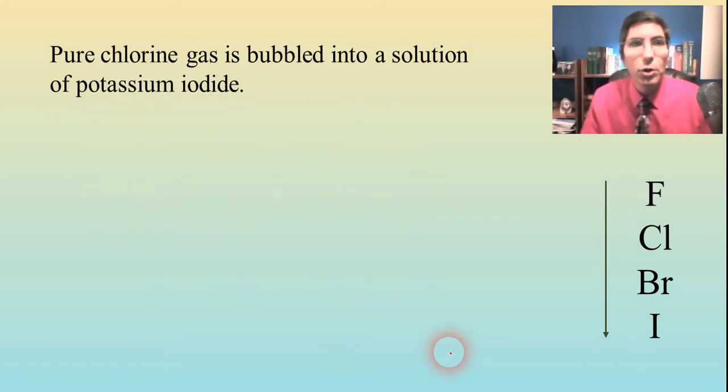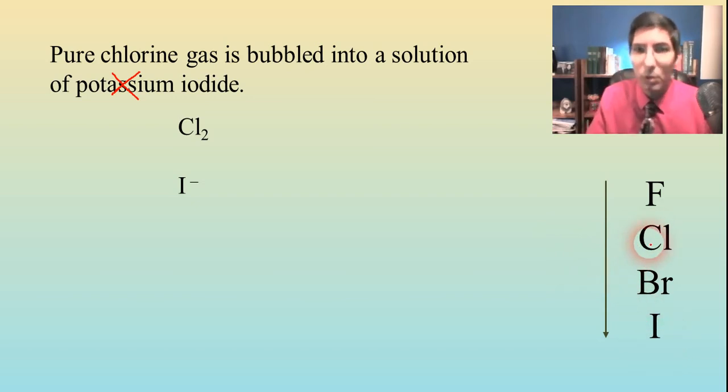So how does this work? Let's try an example. Pure chlorine gas is bubbled into a solution of potassium iodide. Well, we have chlorine gas, so that's Cl2. And we know that nonmetals will react with nonmetallic ions. So iodide is the other part of this. That means that this time the potassium is the spectator, so I'm just going to cross that out. First of all, we should probably see if this is even going to work. Here's chlorine. Is iodide underneath it? Yes, it is. So this is going to work.